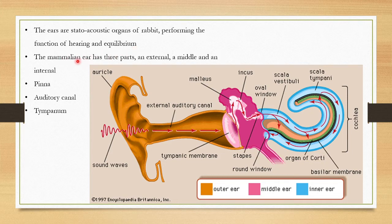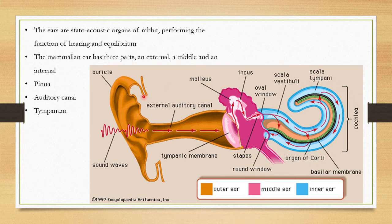The mammalian ear, or rabbit ear, has three parts: an external ear, a middle ear, and an internal ear. So three regions are there.